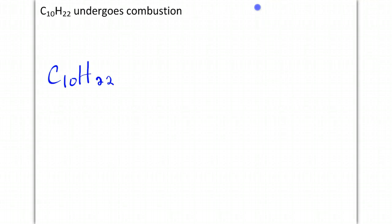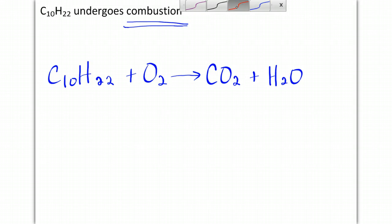C10H22 undergoes combustion. Because it's a combustion reaction, you have to add oxygen on the left side, and then it's going to always produce the same two products, CO2 and H2O. So when we balance this, we have 10 carbons on the left, so we'll put a 10 in front of the carbon on the right. We have 22 hydrogens on the left, so 11 times 2 makes 22 on the right. This is going to give us a predicament with our oxygen, because we have 2 on the left, but on the right we have 20 plus 11, which equals 31.